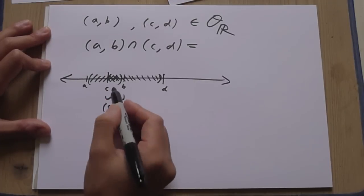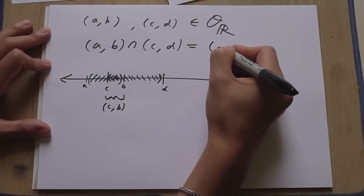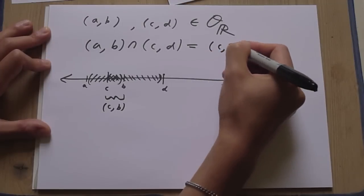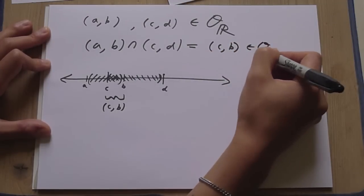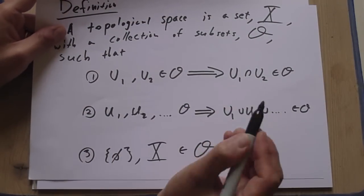So this is the interval from C to B. So we see the intersection of A, B with C is just the open interval from C to B. And this is also in O. The first one is satisfied.